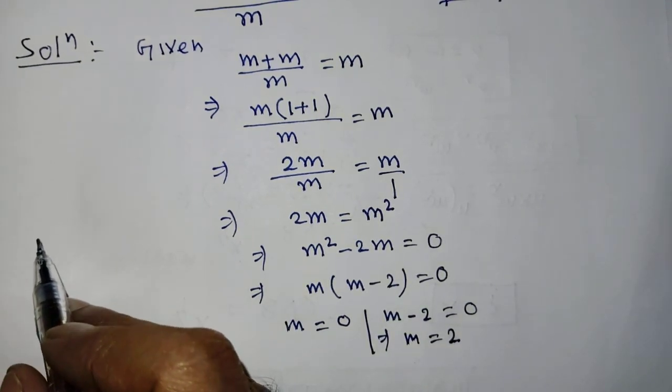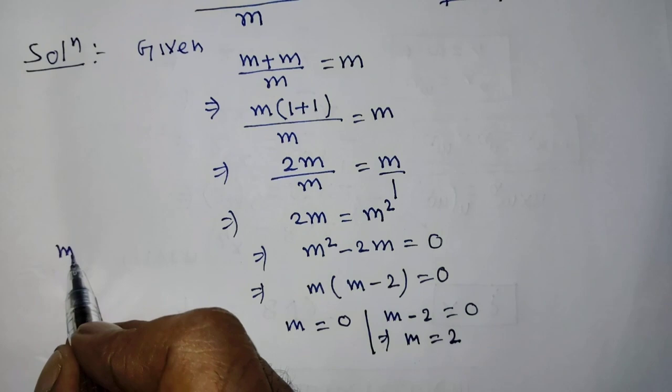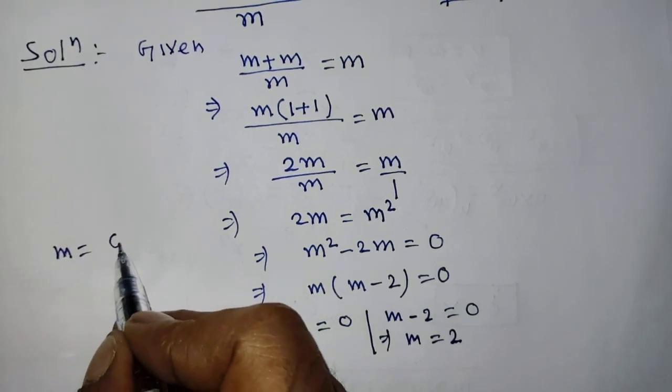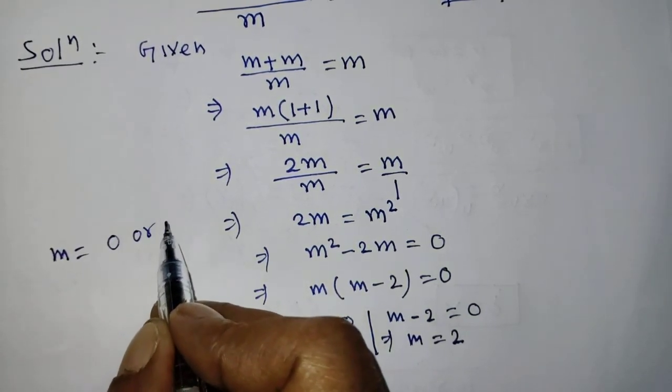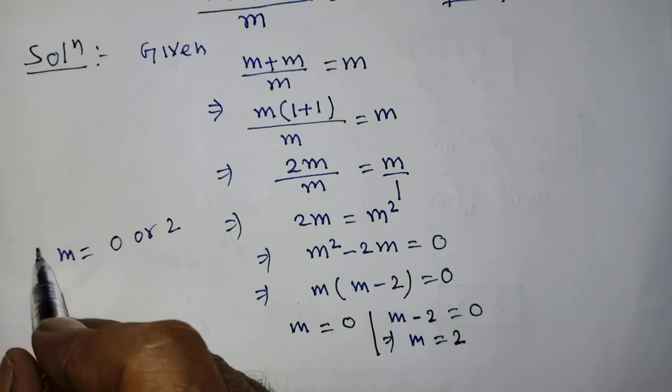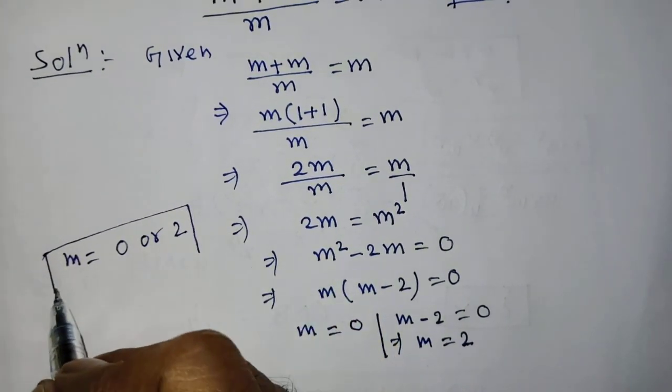So guys, all values of m will be 0 or 2. This is our final answer.